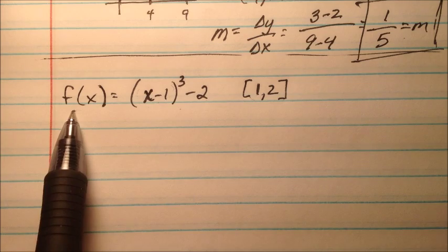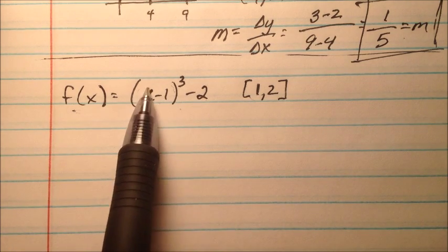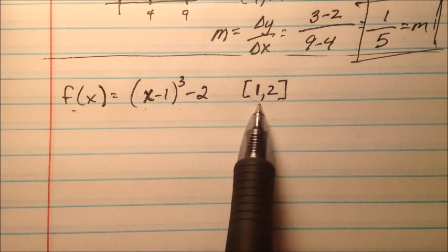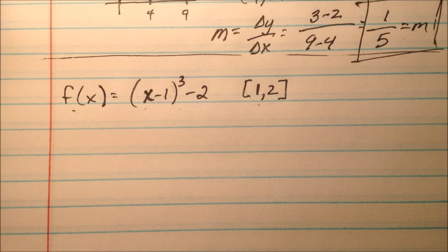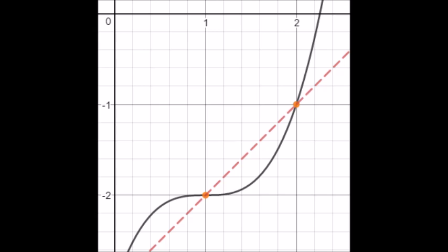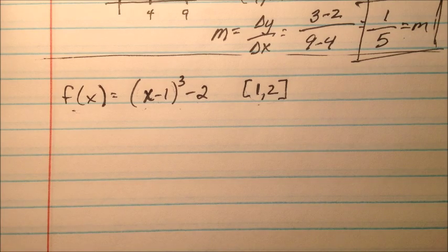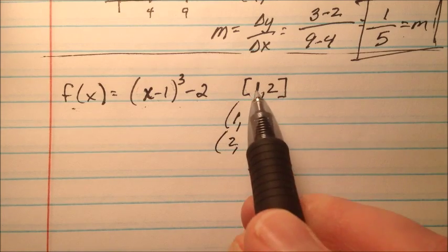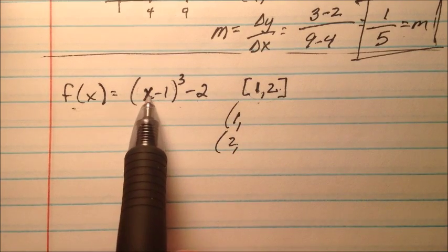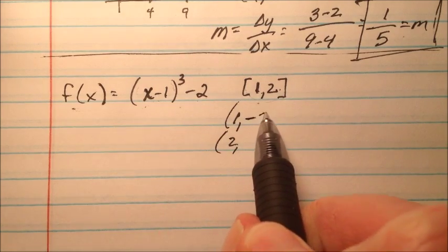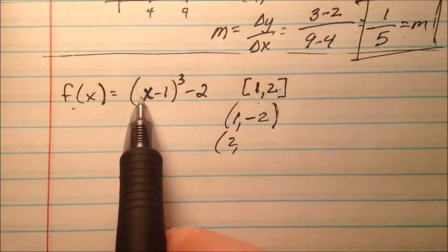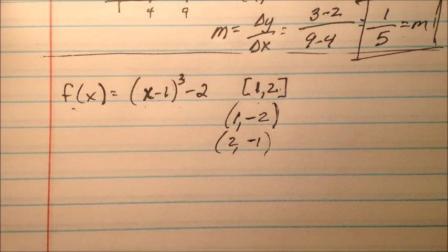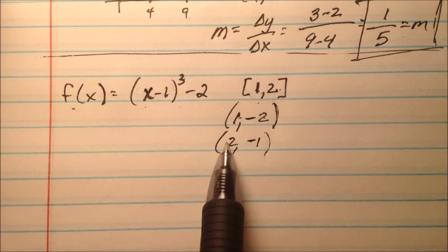In the fourth example, we have f of x equals (x minus 1) cubed minus 2, and we care about it from 1 to 2. When we plug in 1: 1 minus 1 is 0, cubed is 0, minus 2 is negative 2. When we plug in 2: 2 minus 1 is 1, cubed is 1, minus 2 is negative 1. So we have endpoints (1, -2) and (2, -1).